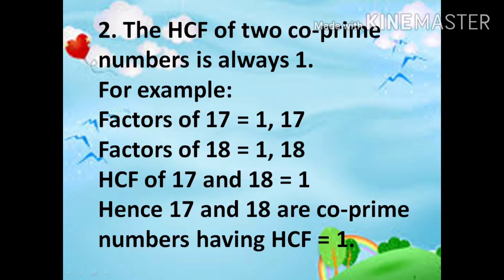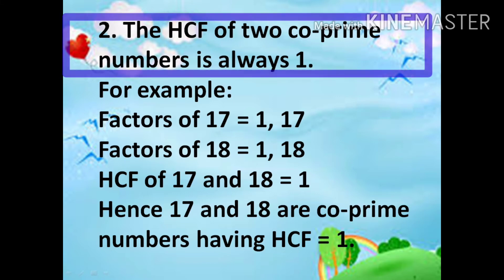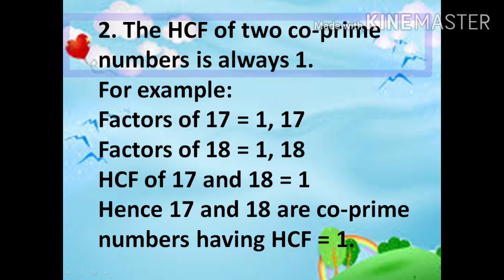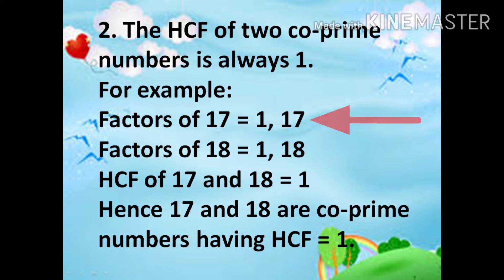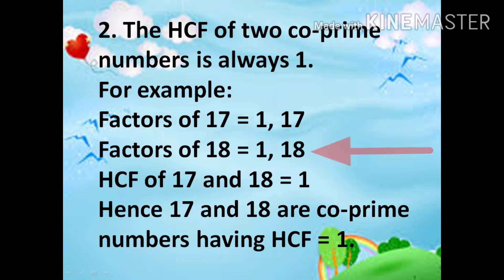Let's understand the second property. The HCF of 2 co-prime numbers is always 1. For example, factors of 17 are 1 and 17, and factors of 18 are 1 and 18.